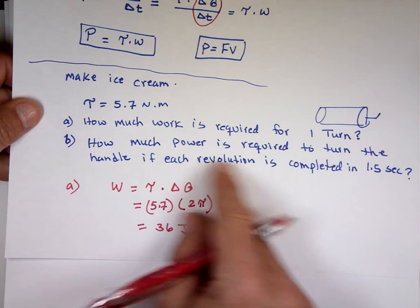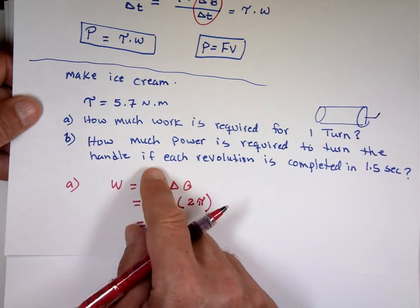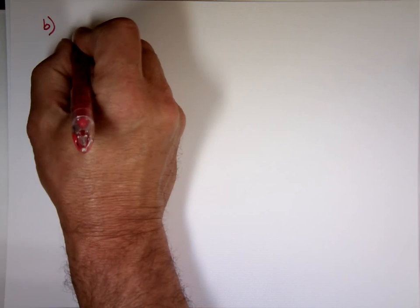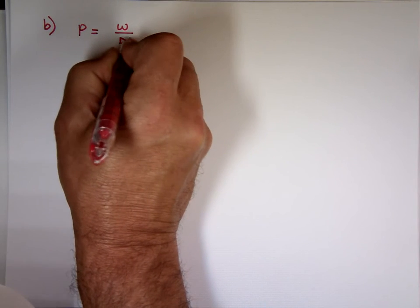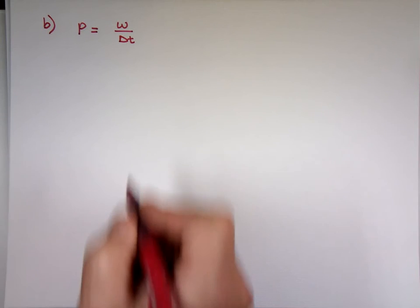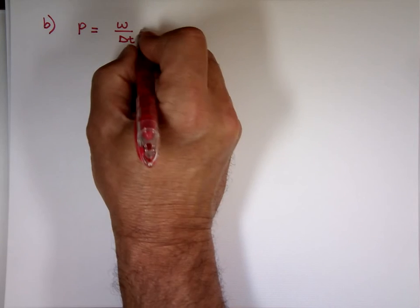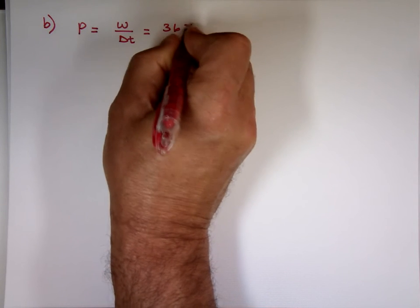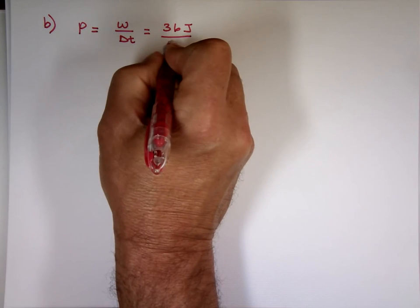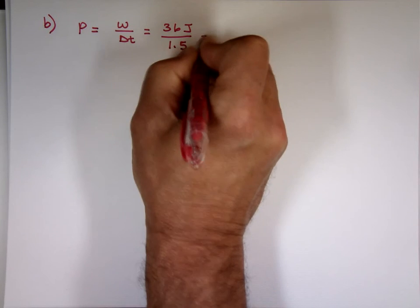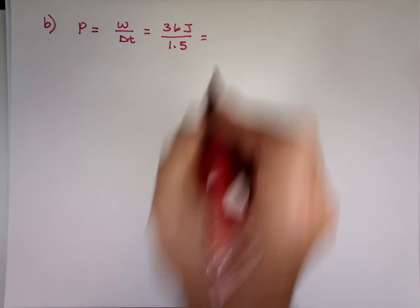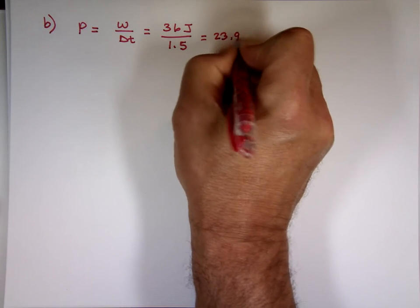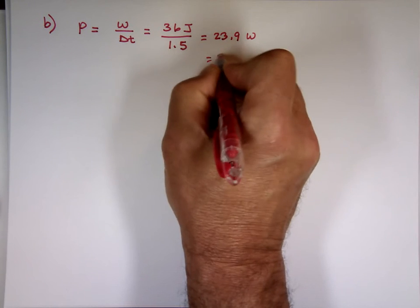How much power is required to turn the handle if each revolution is completed in one second? Power. Let's find the equation for power. Power is work divided by delta T. Well, do we know what the work is here? The work is 36 joules. And the time is 1.5 seconds. 23.9 roughly. Watts. Or 24 watts. Two significant digits.